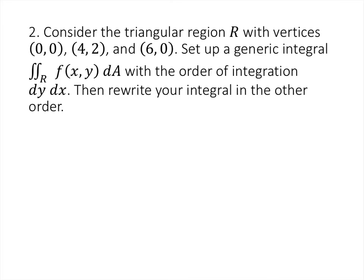This is a similar type of problem, but this time rather than being given a picture with functions as the bounds of our region, we're told that we have a triangle with various vertices. So let's first draw a diagram of this region. We've got the points (0, 0), (6, 0), and (4, 2). The borders of this triangular region are functions that we should figure out the formulas for.